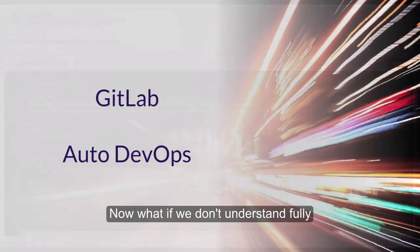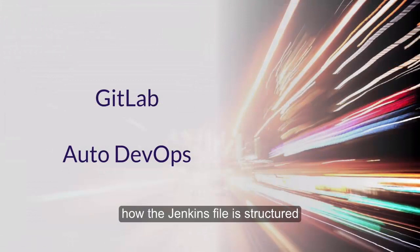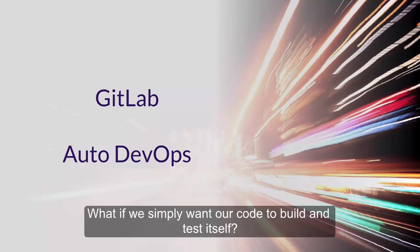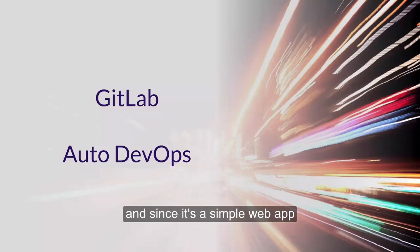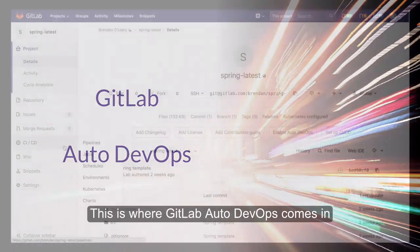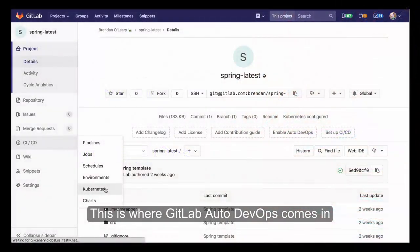Now, what if we don't fully understand how the Jenkins file is structured or the new YAML concept in GitLab CI/CD? What if we simply want our code to build and test itself? And since it's a simple web app, could it also be deployed for us automatically? This is where GitLab Auto DevOps comes in.